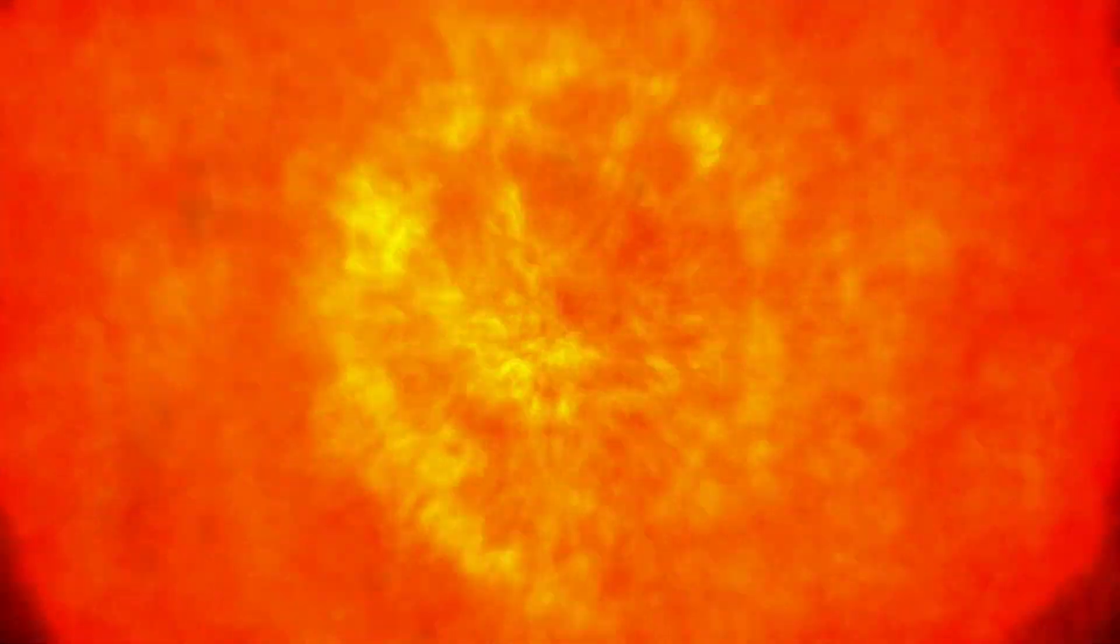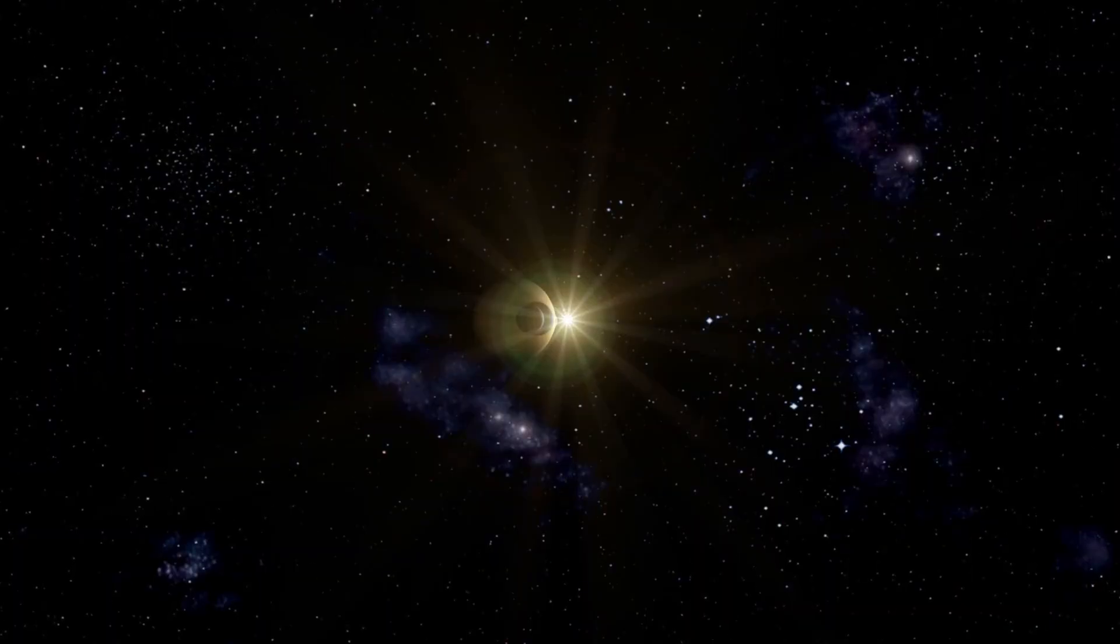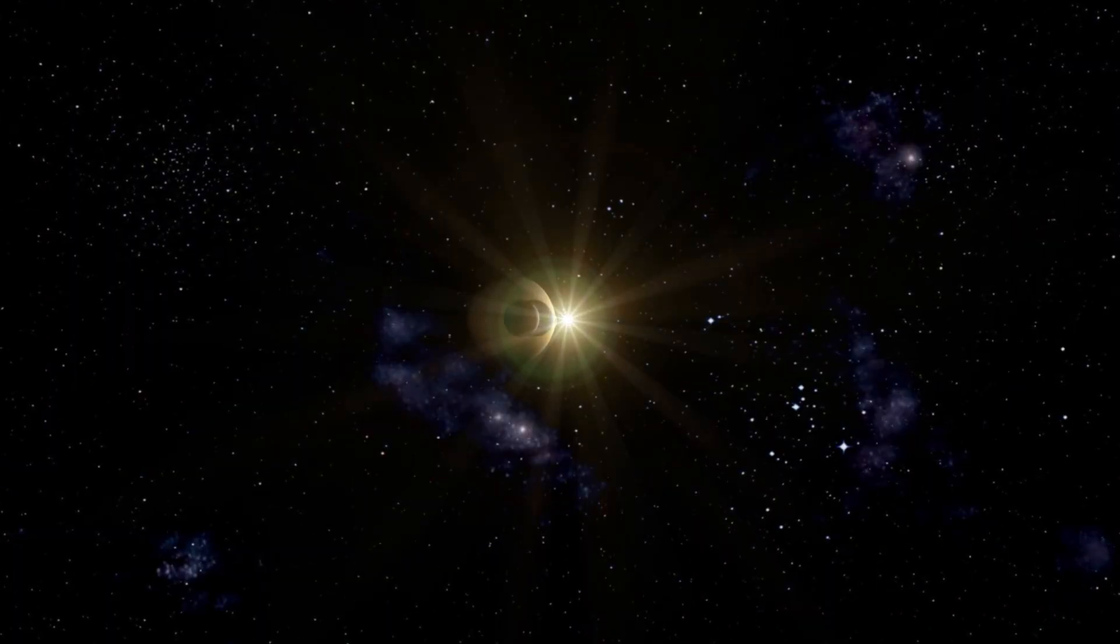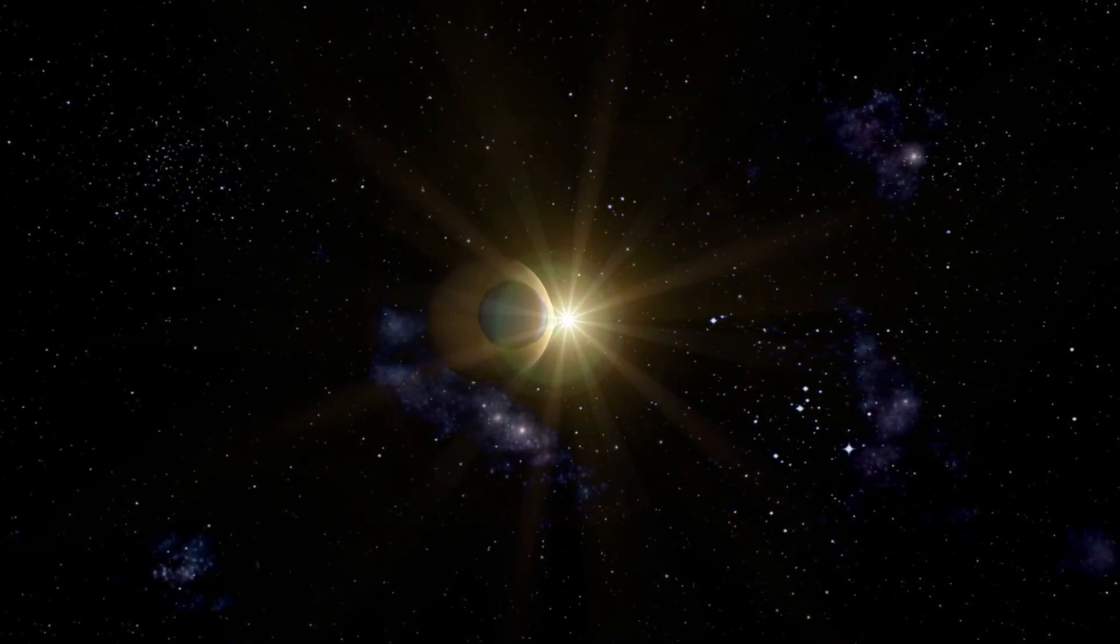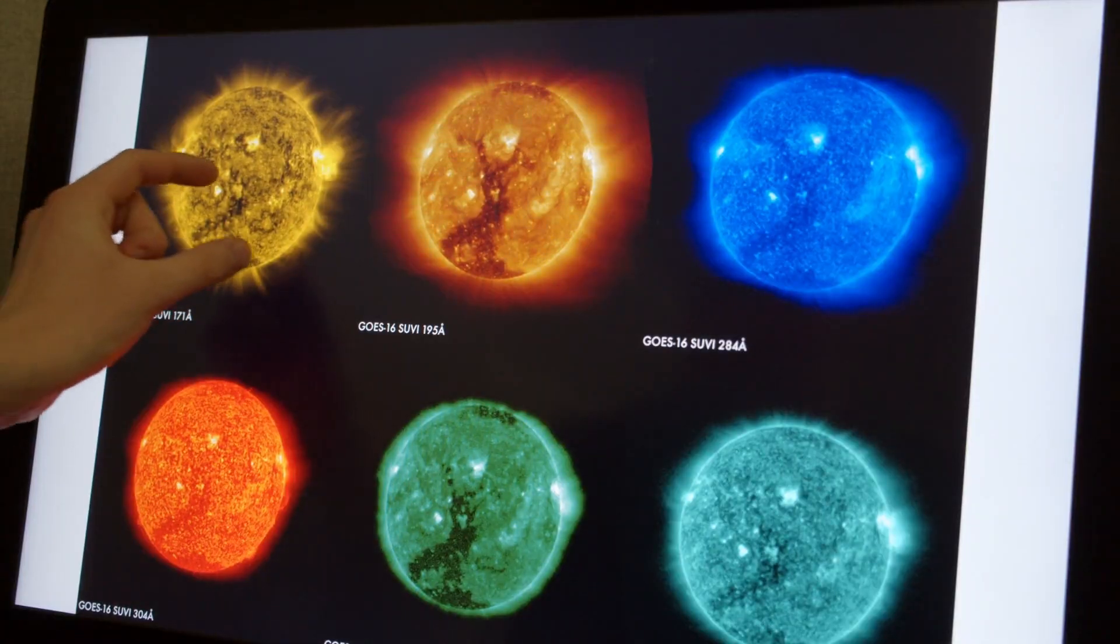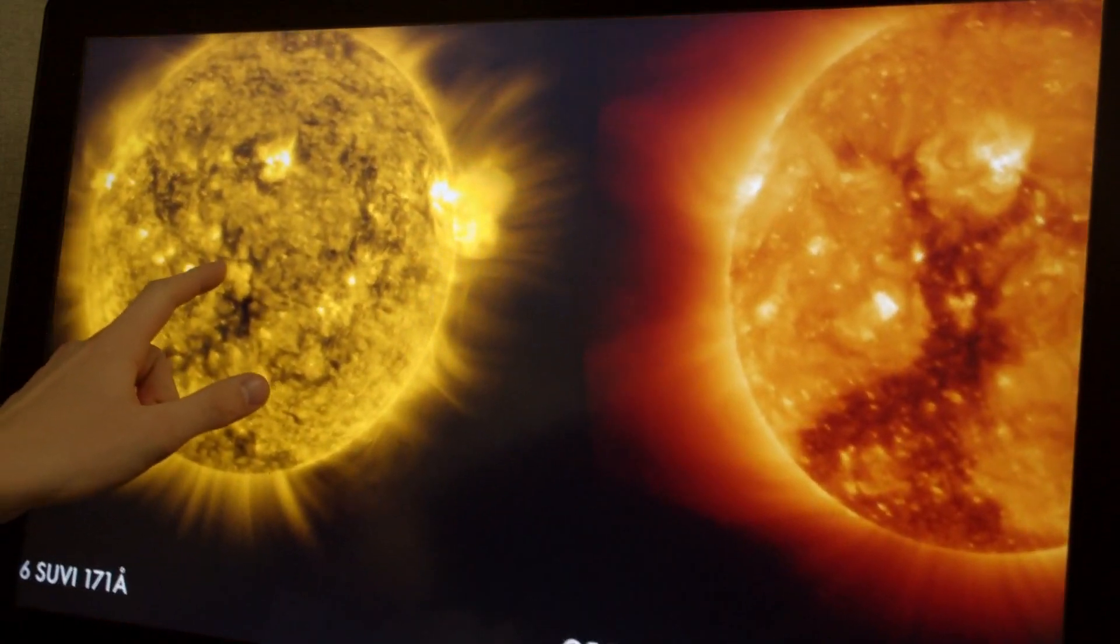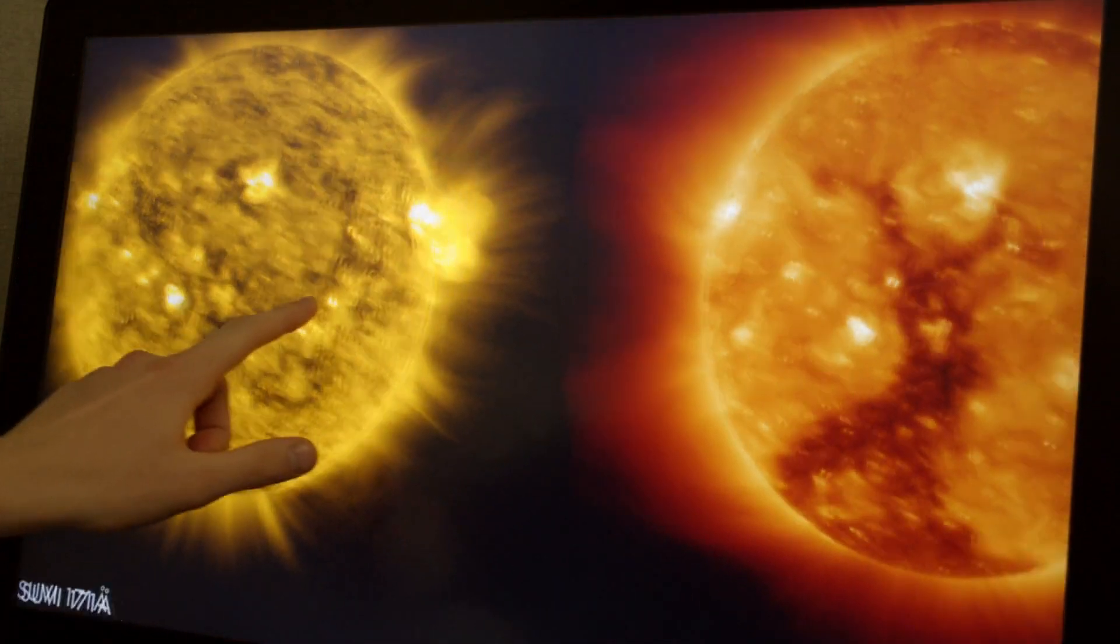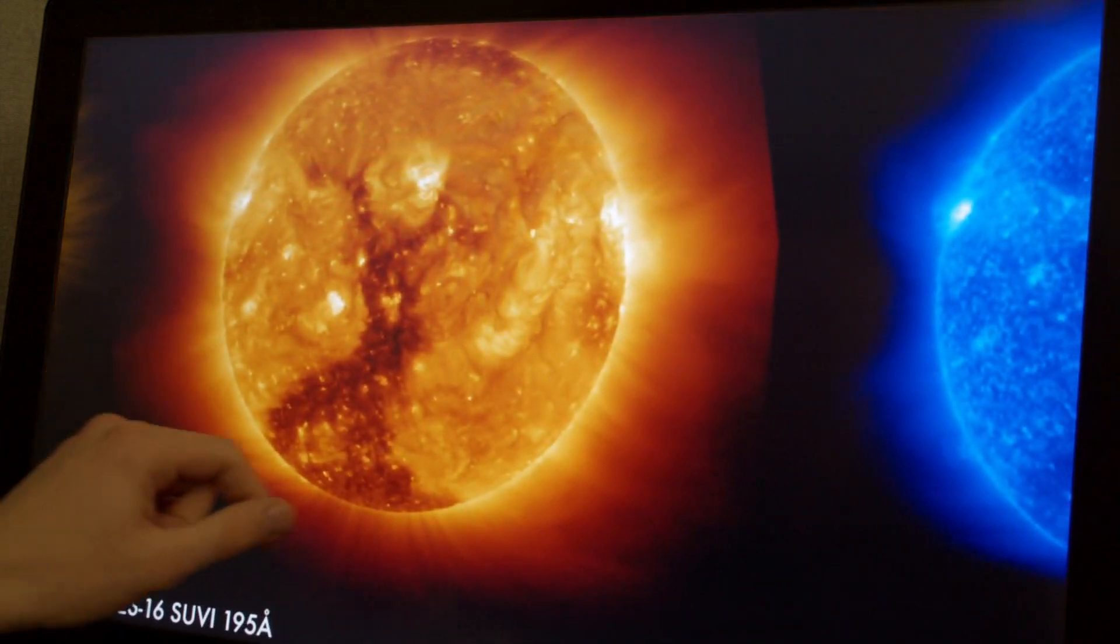In the case of Betelgeuse, a red supergiant nearing the end of its life cycle, this balance has become increasingly unstable. As the star depletes its core hydrogen fuel, the nuclear fusion processes that sustain it undergo significant changes. When hydrogen fusion slows in the core, radiation pressure decreases, causing the gravitational pull to momentarily gain the upper hand. This results in the contraction of the star's outer layers.